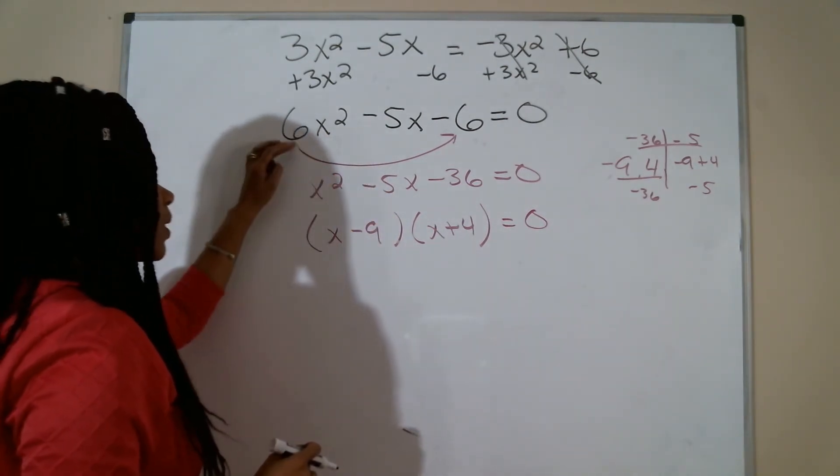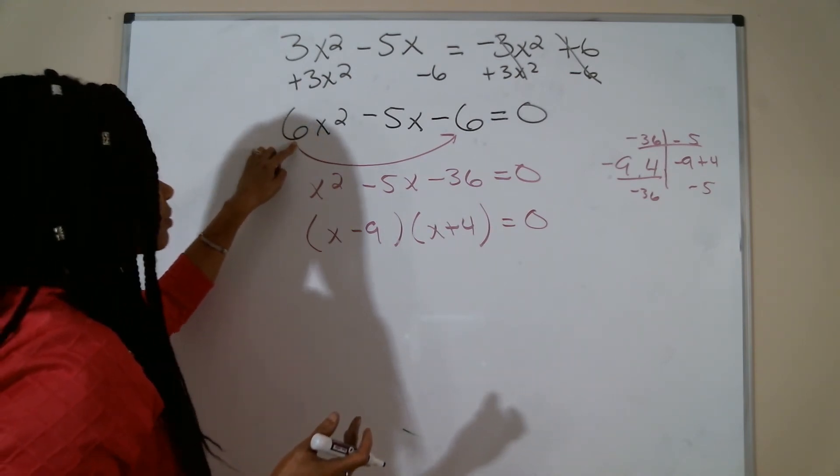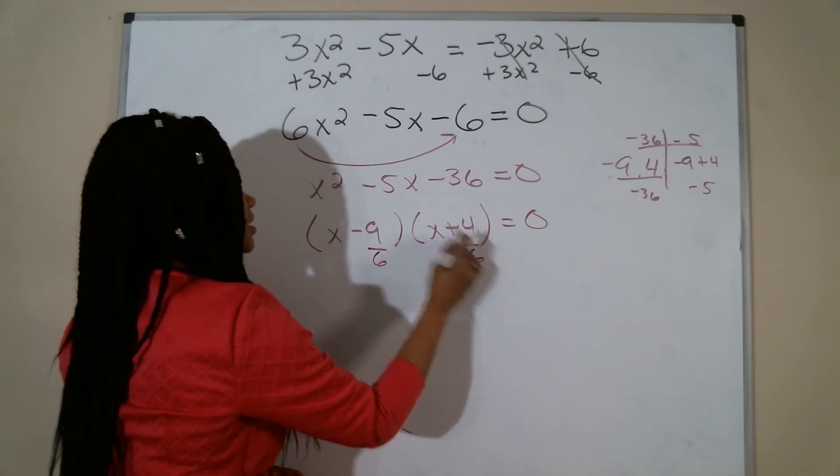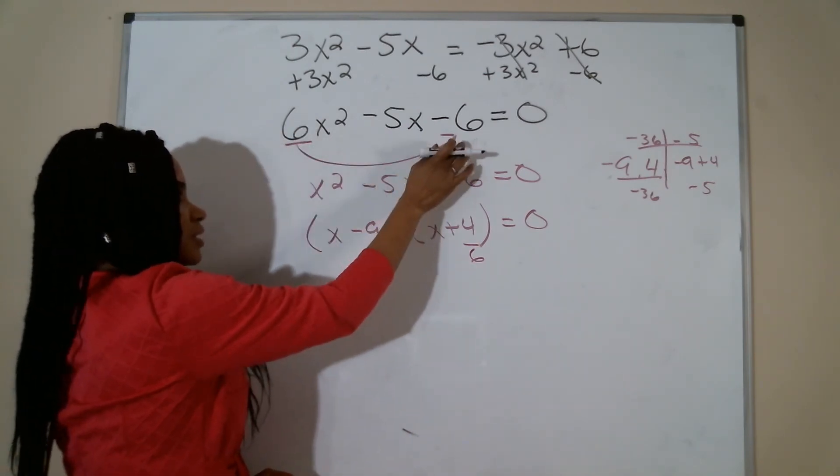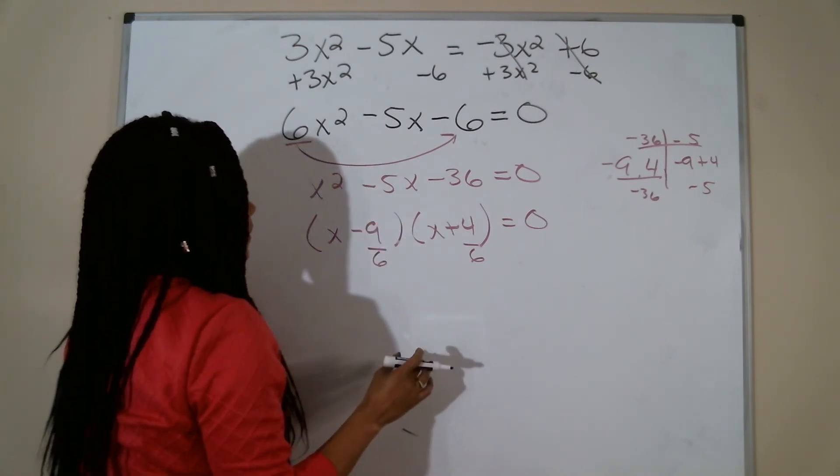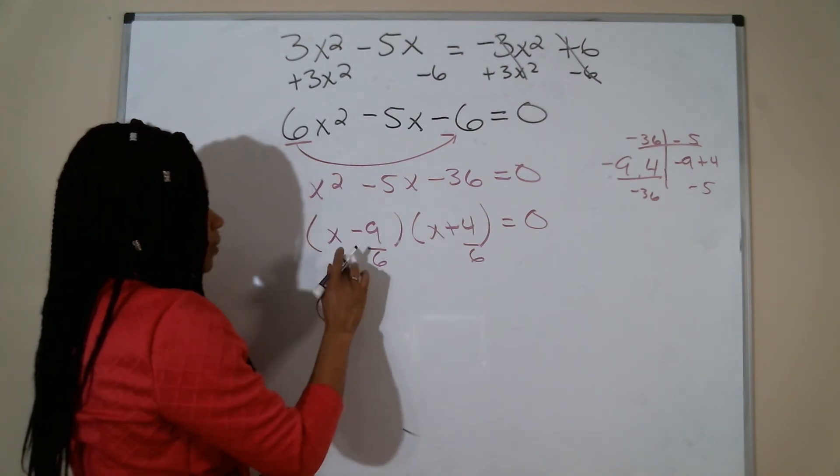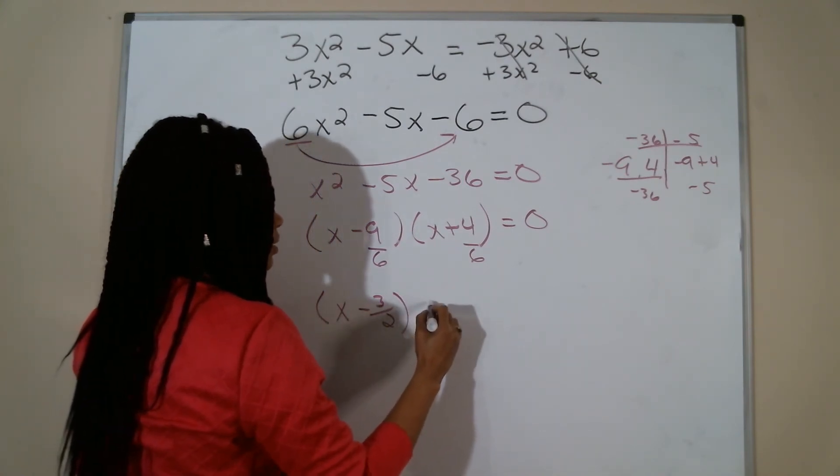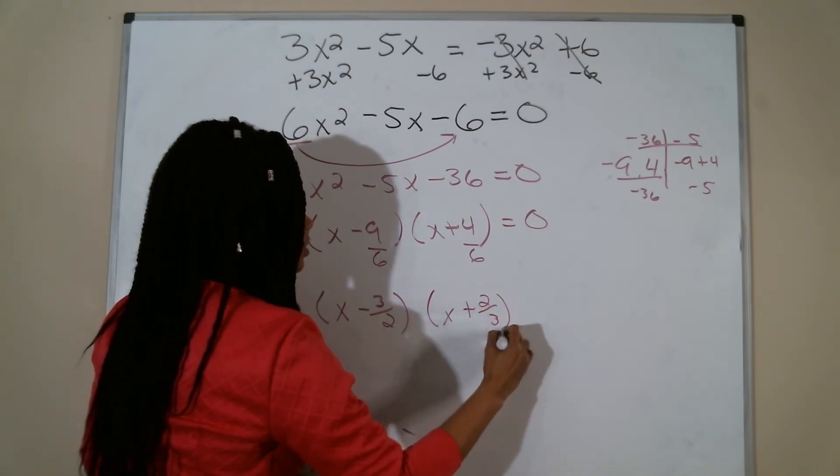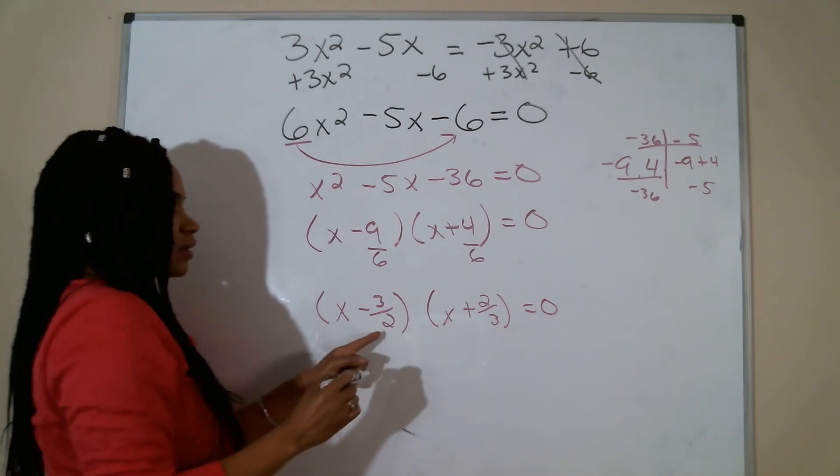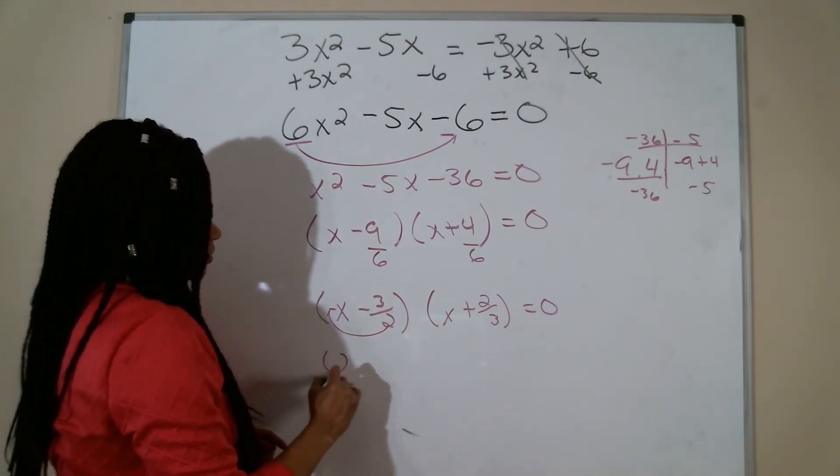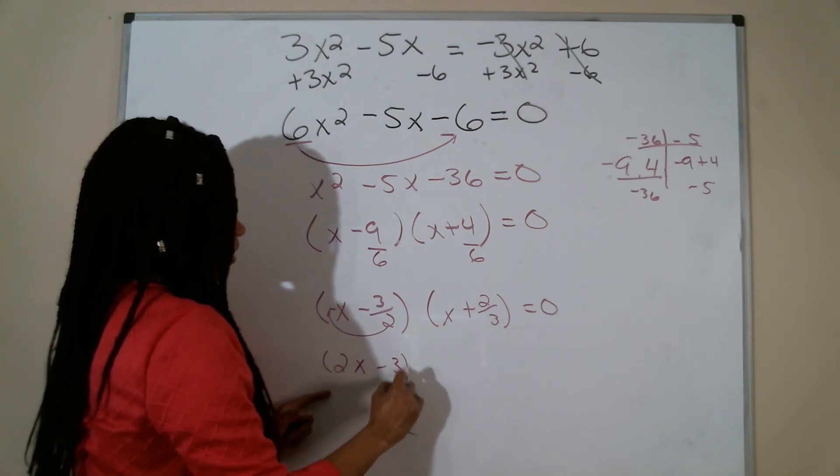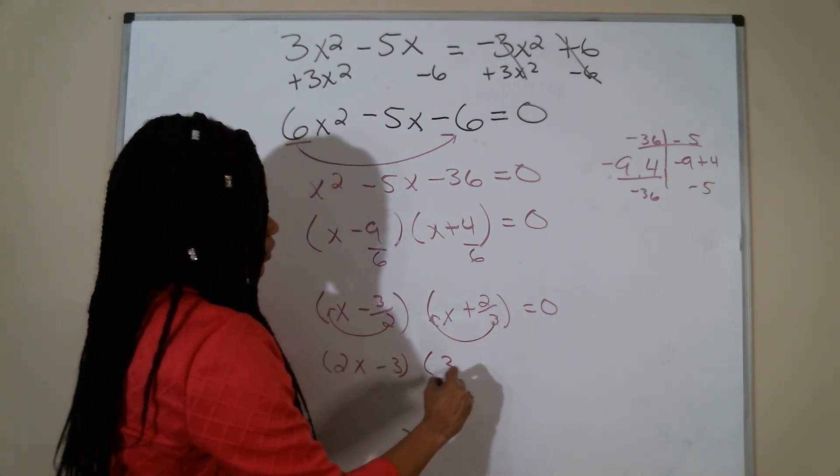And then I want to slide what I use to slip. So I slip the 6, I want to divide my factors by 6. Whatever number you move to the end, that is what you want to divide by. I can reduce. 9 over 6 reduces to 3 over 2, and 4 over 6 reduces to 2 thirds. So I want to slide my number to the front. Move that 2 to the front. So 2x minus 3. Move that 3 to the front. 3x plus 2.